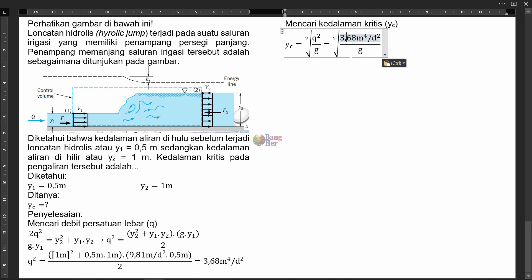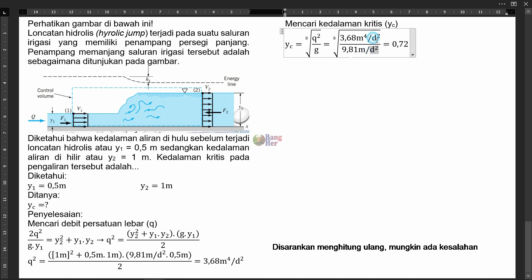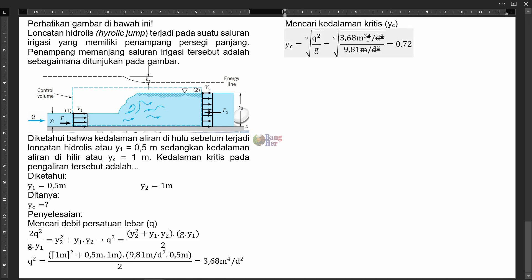Kita input nilainya: q² adalah 3,68 meter pangkat 4 per detik kuadrat, percepatan gravitasi adalah 9,81 meter per detik kuadrat. Kalau dihitung dan diakarkan tiga, diperoleh hasil YC = 0,72 meter. Satuannya: detik kuadrat habis, meter pangkat 4 dibagi meter menjadi meter pangkat 3, lalu diakarkan 3 menjadi meter. Jadi satuannya adalah meter. Sekian penyelesaian soal ini.